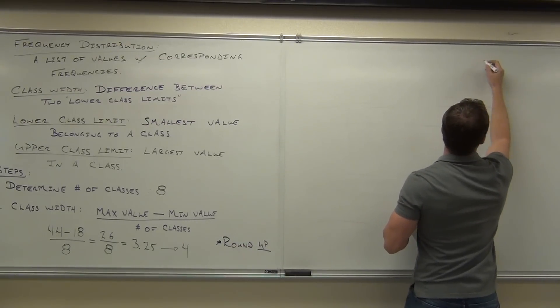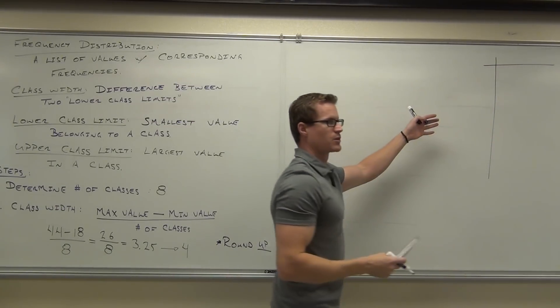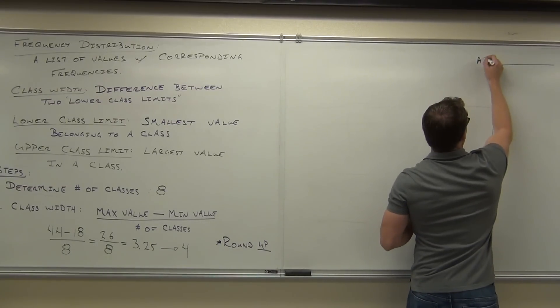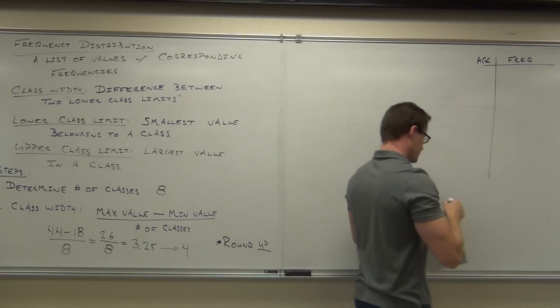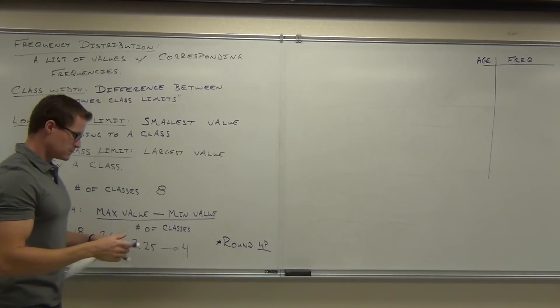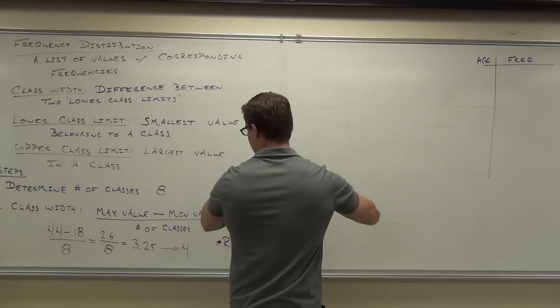So we're about ready to start making this thing. Here's how a typical frequency distribution looks. We're going to have what we're looking at. In our case, it's age here. And we're going to list the frequencies here. So we've determined the number of classes. You'll take the max value minus the min value. That gives you a range for your sample. You divide that by the number of classes. You round it up. And that tells you your class width. Here's how you find your class width. You must have a starting point. This is step 3.